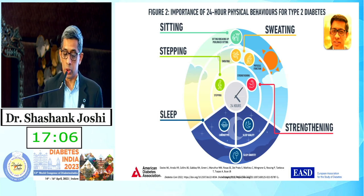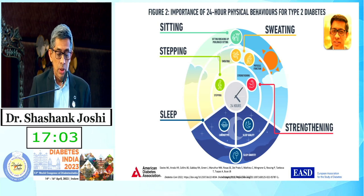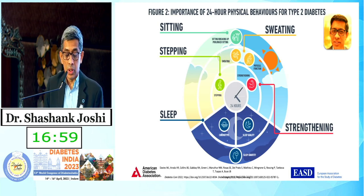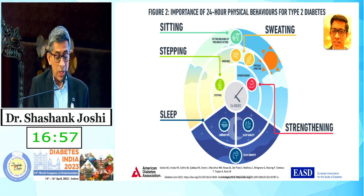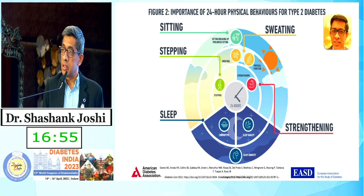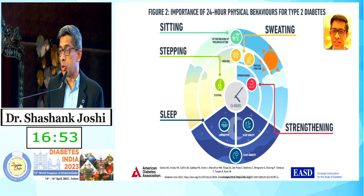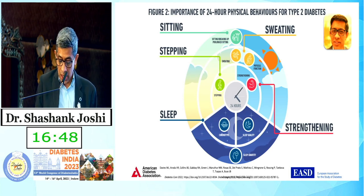Sitting is the next smoking. You need to break the monotony — stepping, sweating, strengthening. It's all about muscle strength, muscle building, which is very Indian in its DNA. And adequate sleep. These are the five S's.